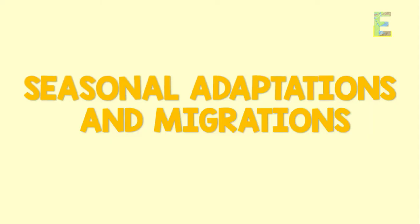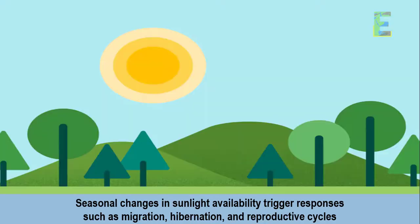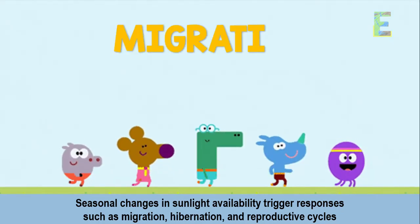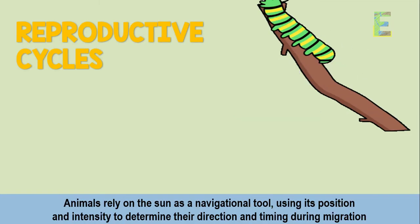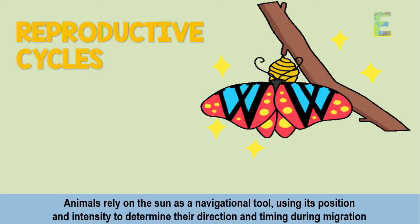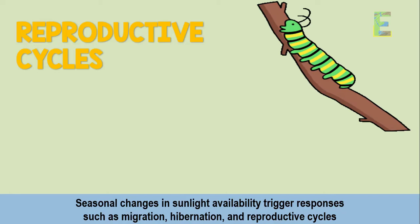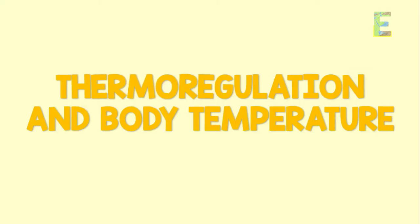Seasonal Adaptations and Migration. The sun's patterns throughout the year influence the behavior and adaptations of many animals. Seasonal changes in sunlight availability trigger responses such as migration, hibernation, and reproductive cycles. Animals rely on the sun as a navigational tool, using its position and intensity to determine their direction and timing during migration, thermoregulation, and body temperature management.